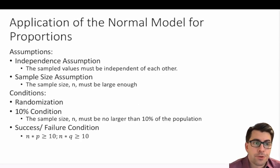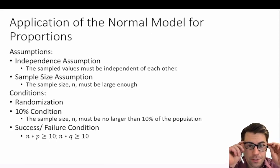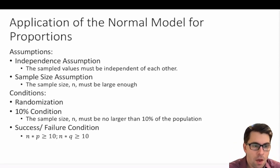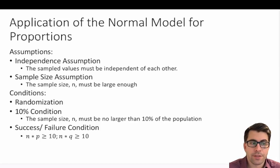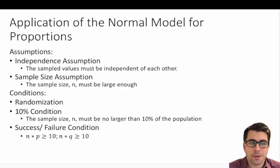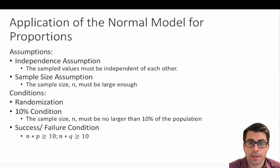When we're talking about sampling distributions, we can assume a normal model for proportions, but to assume a normal model, there are a few assumptions and conditions that must be met. One is the independence assumption — our observations must be independent of each other. We also have a sample size assumption: the sample size n must be large enough. Our sample must be randomized as part of our independence assumption, and there is a 10% condition.